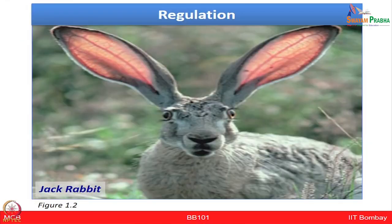Now let us look at the jack rabbit, which illustrates regulation. The blood flow is regulated in the blood vessels, and even the ear in this case helps to maintain constant body temperature. When the rabbit is running fast it generates a lot of heat, and the ear exchanges that heat with the surrounding air to maintain body temperature.